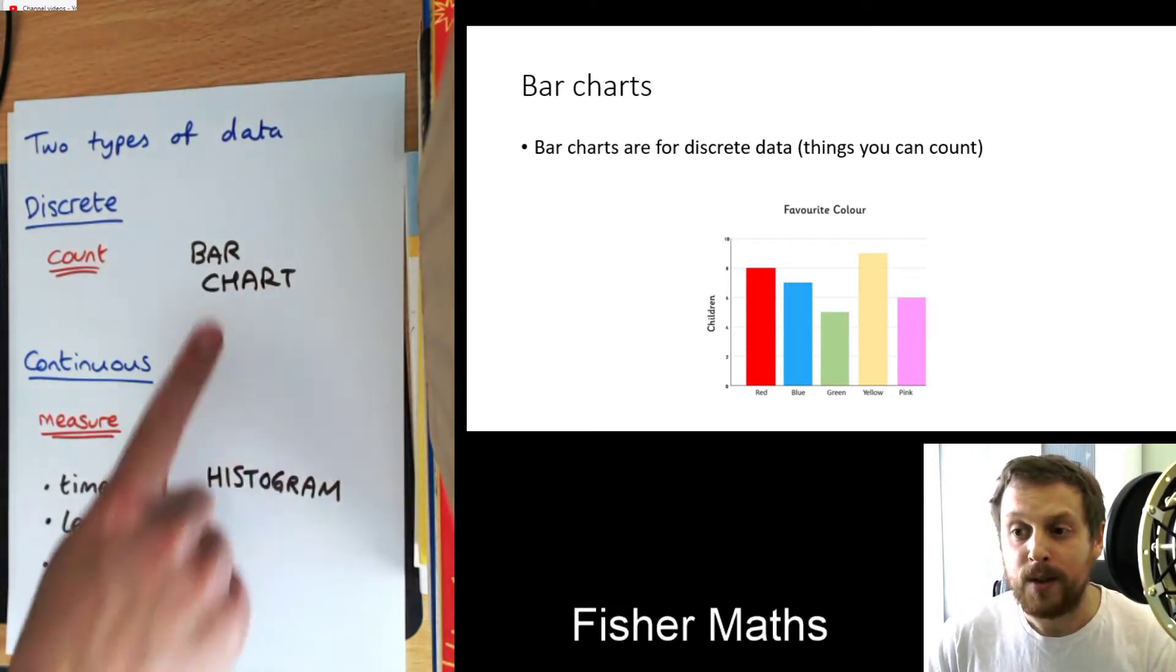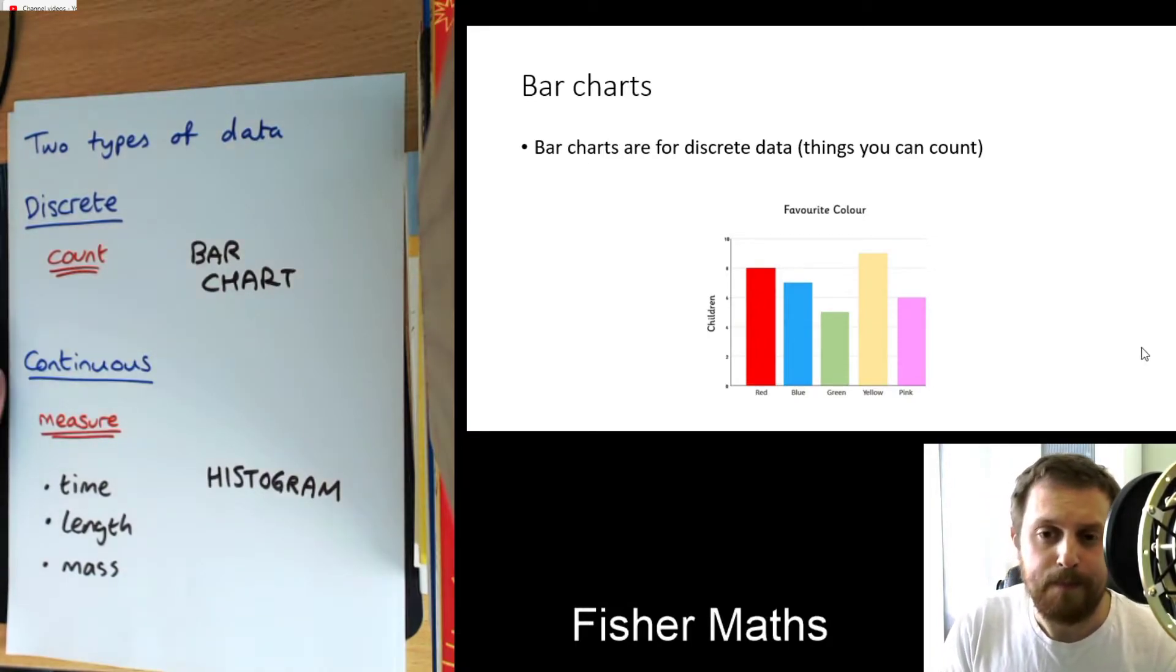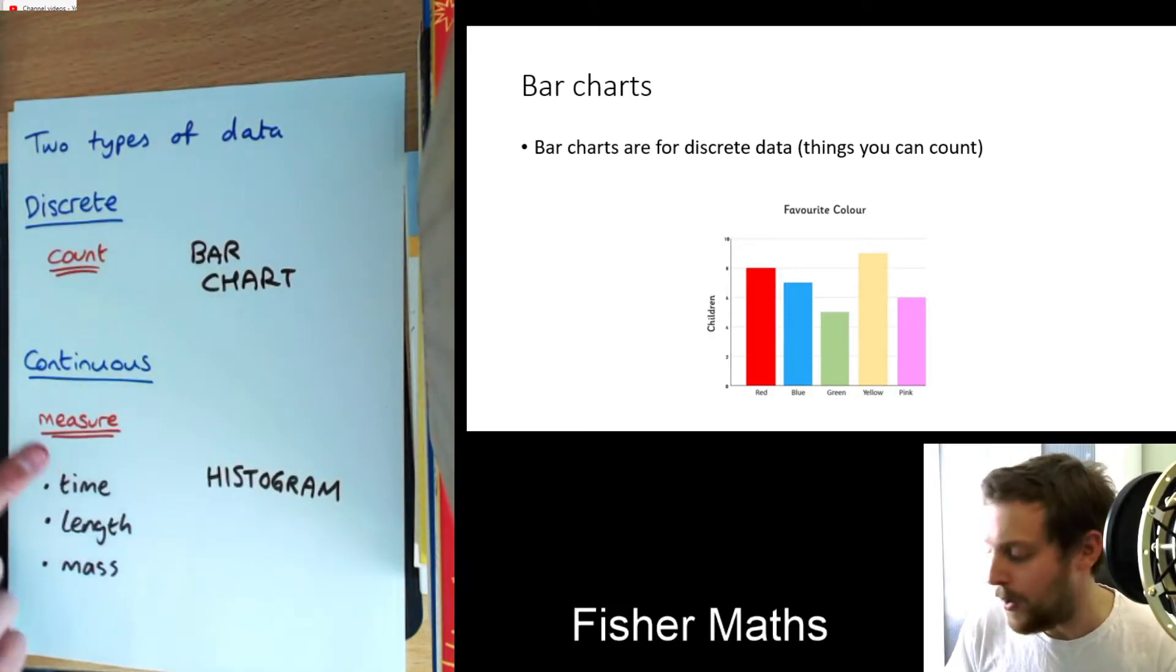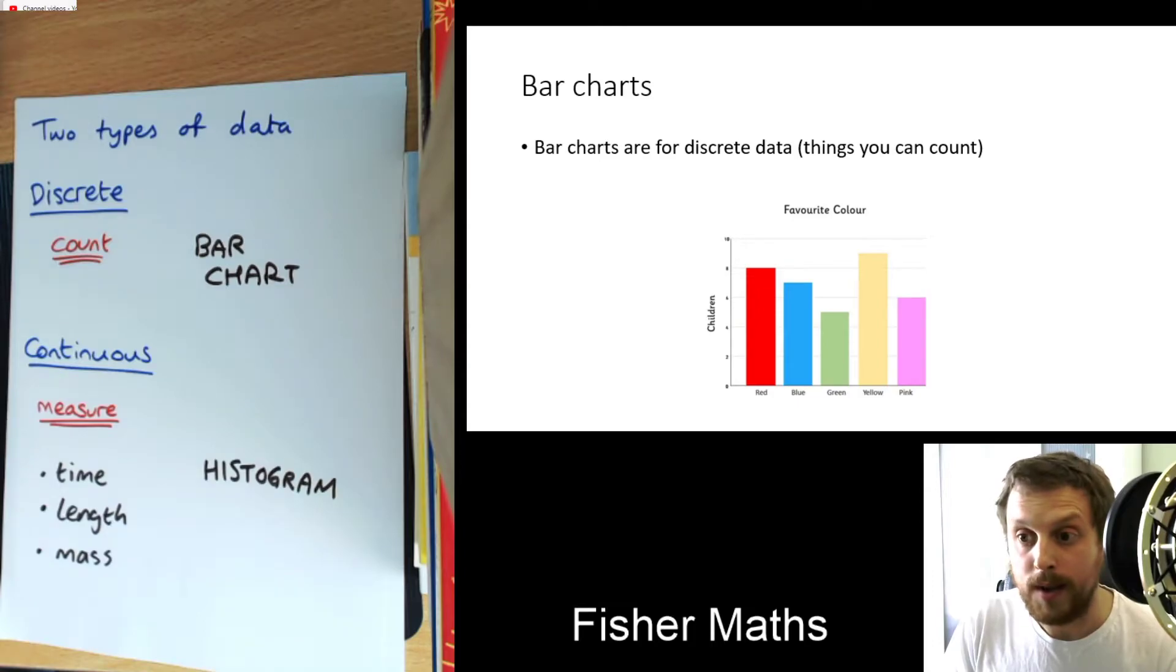And then there's still going to be something to do with the frequency involved. I'll obviously get on to that in a later video. But these two things are quite similar. The only difference being bar chart is discrete, histogram is going to be continuous.